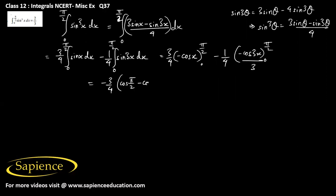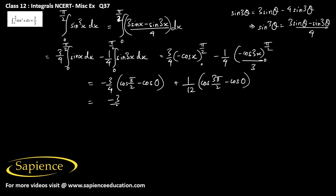So this becomes minus (3/4) times (cos(π/2) minus cos(0)), plus (1/4) times (cos(3π/2) minus cos(0)). Now, cos(π/2) is 0, cos(3π/2) is also 0, and cos(0) is 1.